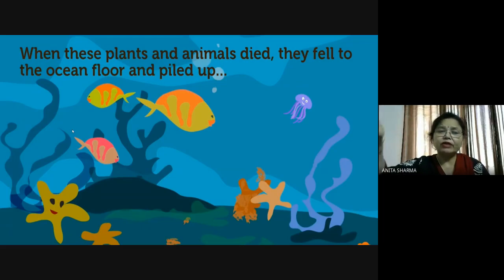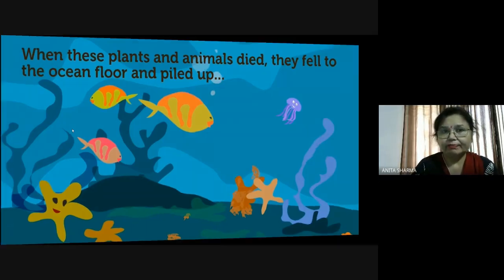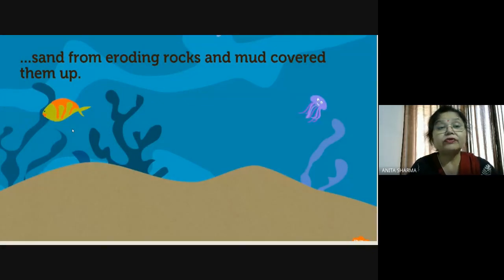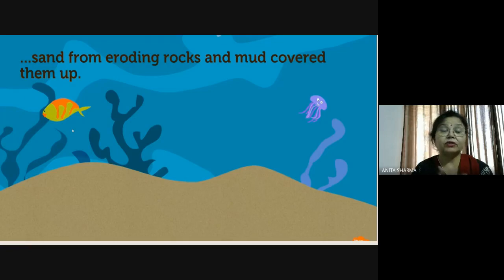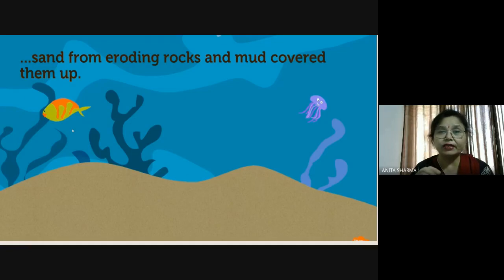When these plants and animals died, they fell to the ocean floor and piled up. Piled up means — like if you put clothes at one place, more and more clothes make a pile. Similarly, a pile of dead animals was on the ocean floor. Then sand from eroding rocks and mud covered them up. Rocks are broken by natural forces like wind, water, and heat — they expand, shrink, develop cracks, and break into smaller pieces, eventually becoming silt or clay.